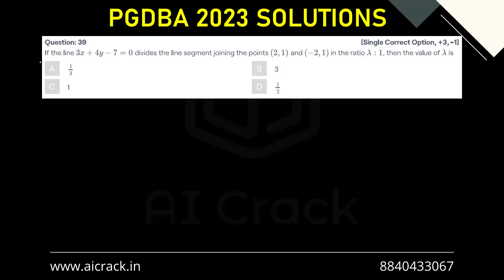Let's solve question number 39. The line 3x plus 4y minus 7 equals 0 divides the line segment joining the points (2,1) and (-2,1) in the ratio lambda to 1. Then the value of lambda is...